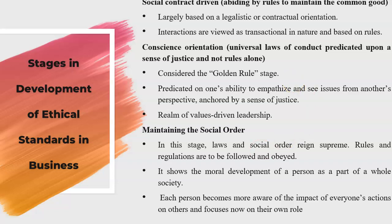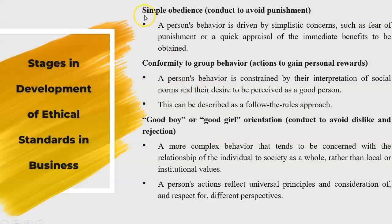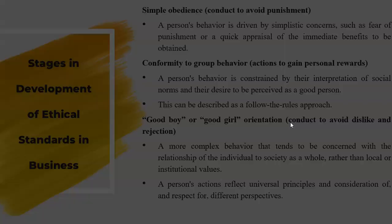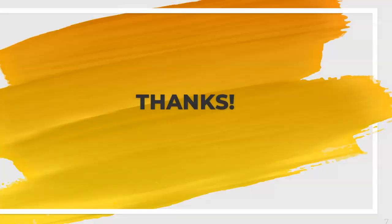To summarize what we've covered: the stages and development of ethical standards in business include simple obedience, conformity to group behavior, good boy or good girl orientation, social contract driven abiding by rules, conscience orientation predicated upon a sense of justice, and maintaining the social order. I hope it's clear and all lectures were helpful. I'll be back with a new lecture — please share your feedback. Thank you and have a wonderful day.